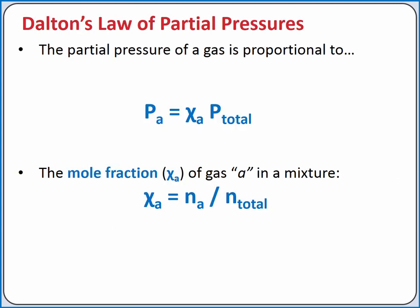The partial pressure of a gas is proportional to the mole fraction of that gas in the mixture. The mole fraction of gas A in a mixture would be equal to the moles of gas A divided by the total moles of gas in the mixture.